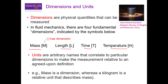Attaching a unit to a dimension is really just a way of attaching a number using an arbitrary measure. For example, I have shown here the standard kilogram, kept at the Bureau of Weights and Measures in Paris, which is the international standard kilogram against which every other kilogram in the world is measured. Mass is a dimension, whereas kilogram is the relative unit that describes mass.